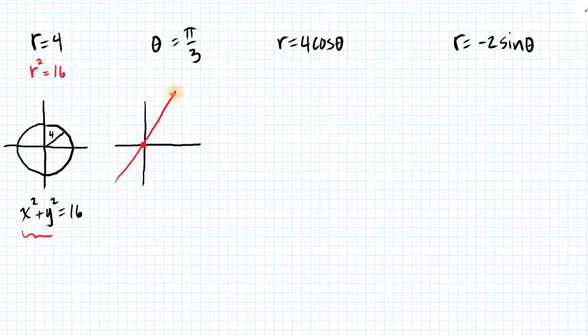So in this case, r has no restriction because r is missing from the equation. So this tells us that theta is equal to pi over 3 no matter what, and r has no restriction. So when r is positive, we are going to be plotting these points up here in quadrant 1.